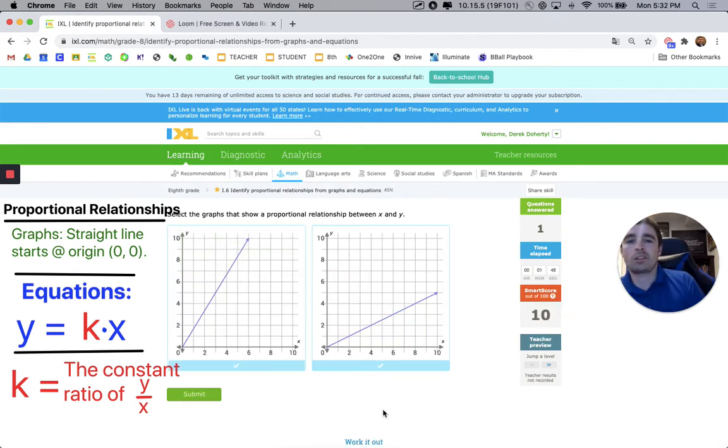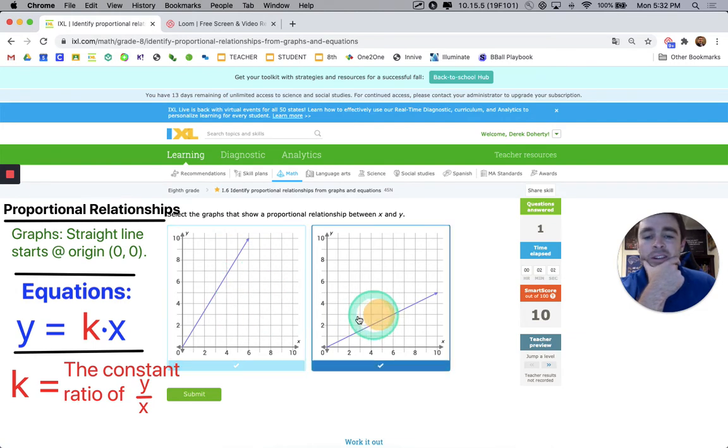Now there's another example on our screen. You could be pausing the video or thinking to yourself right now, which of these graphs meet our definition of having a straight line that starts at the origin. And here I see this is a situation they might be trying to trick you a little bit. Both of these are correct. So I'm going to check off both boxes and you see they both have a blue mark around them.